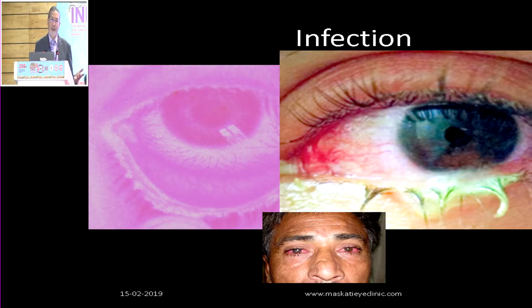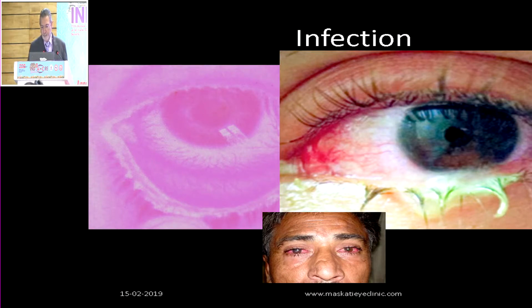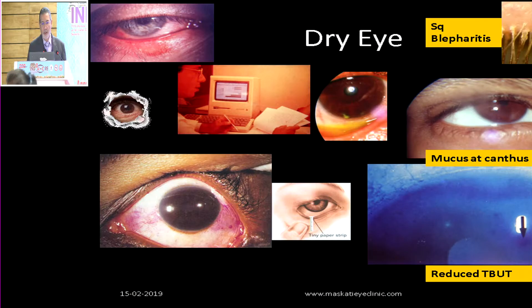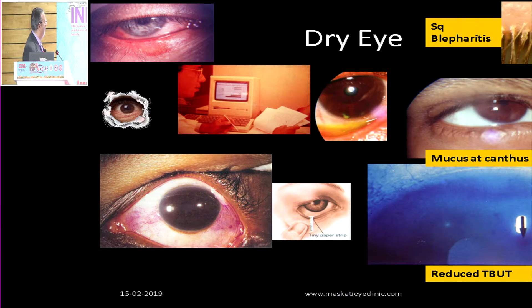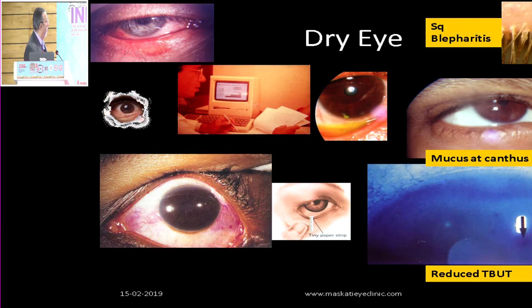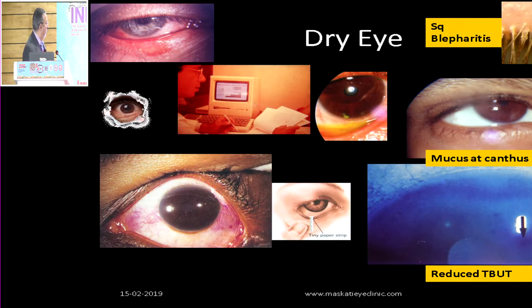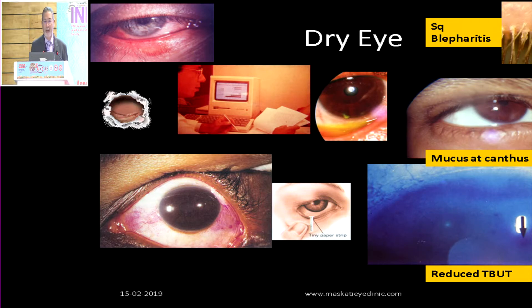If they are viral, just using lubricant drops and some cold compresses would do the trick. And you get sometimes classical dry eye — patients coming with blinking disorders because of computer vision syndrome, small filamentary keratitis, mucus at the canthus, squamous blepharitis, meibomitis. If you do staining, squamous strips and reduced TBUT confirm that this is purely a case of dryness. These are the classical appearances of these three conditions.